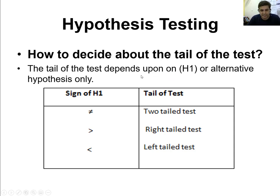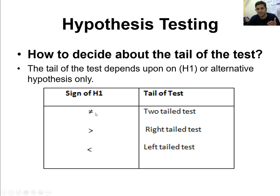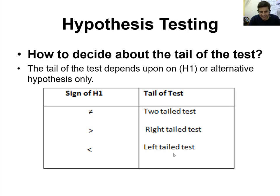The alternative hypothesis always contains an inequality sign. When the null hypothesis shows the equal sign, the alternative hypothesis will show an unequal sign. When it is an unequal sign, it is a two-tailed test. For example, if I say there are 100 rupees in my pocket and you say no, you are not clear whether it is more or less than 100 rupees — that is not equal to, so it is a two-tailed test. If I say there are 10 rupees or less, the alternative is more than 10 rupees — that is a right-tailed test. When the alternative shows less than, it is a left-tailed test.